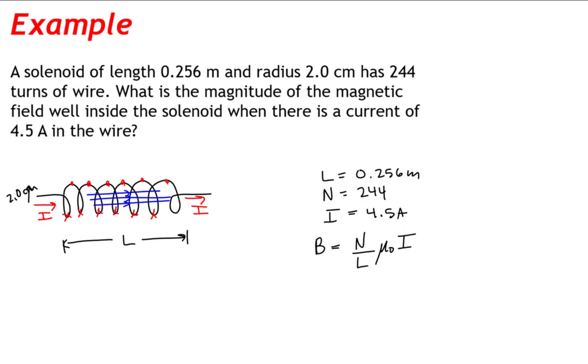We showed this result previously in a previous video. This is a straightforward application of that result where the number of turns is 244, the length is 0.256 meters, the permeability of free space is 4 pi times 10 to the minus 7 tesla meters per amp, and the current is 4.5 amps.